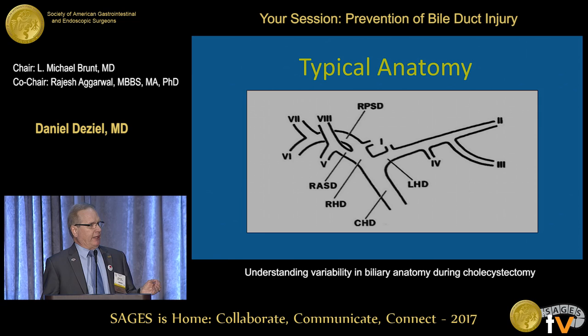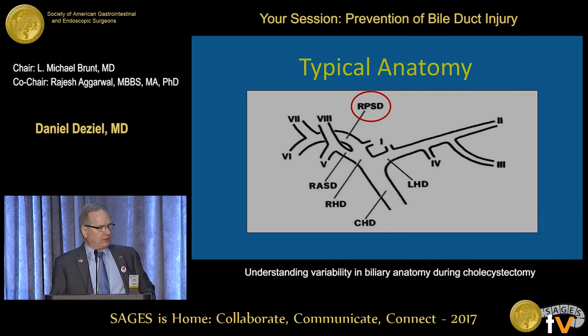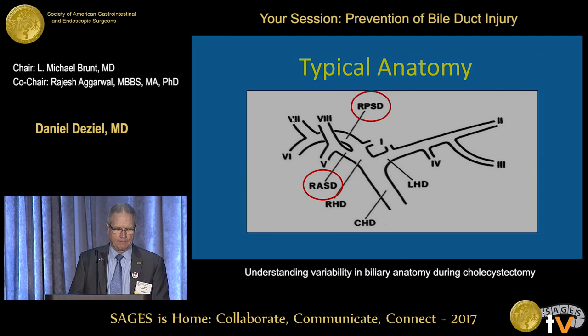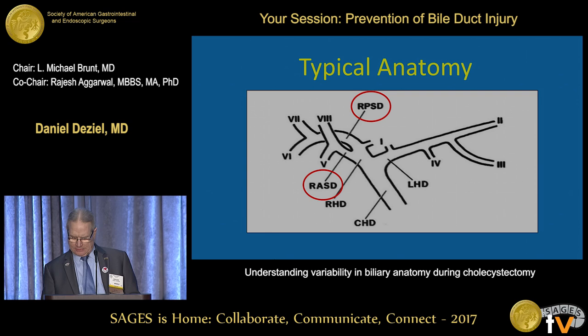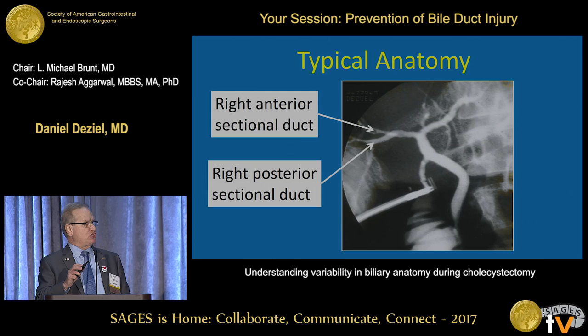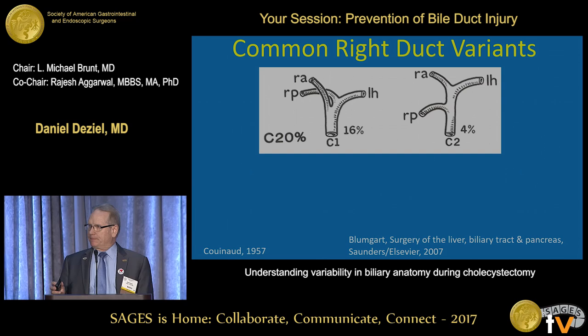About 50 to 60 percent of patients have what we call typical anatomy of the extrahepatic bile ducts, where the right posterior sectional duct from segments 6 and 7 joins up with the right anterior sectional duct from segments 5 and 8 to form the right hepatic duct, which joins the left hepatic duct to form the common hepatic duct. So: right anterior sectional duct, right posterior sectional duct, right hepatic duct.